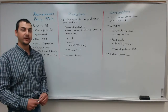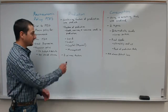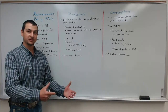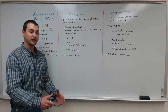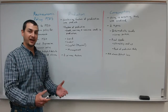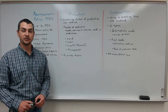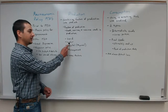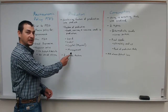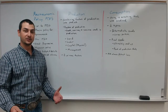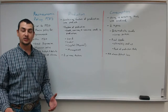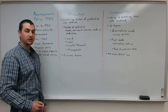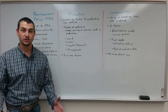Then we also have management — the combining of these three factors of production in order to maximize profits or maximize efficiency. So whenever we talk about factors of production, we're talking about land, labor, physical capital, and management. To produce any kind of product, you need at least two or more factors of production in order to produce a good or service.